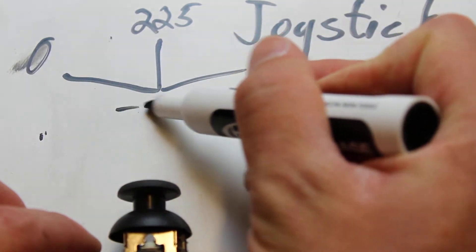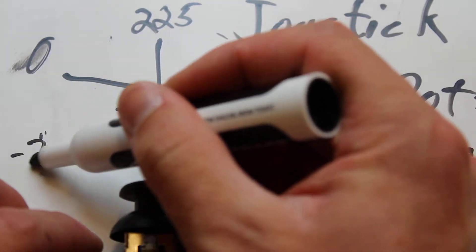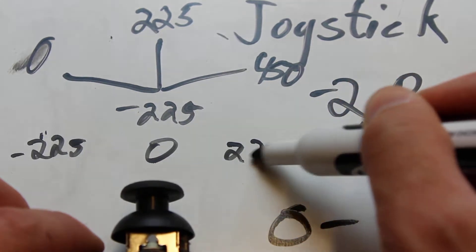So if you subtract 225 from any of the values coming off of it, then you end up with negative 225, 0, and 225.